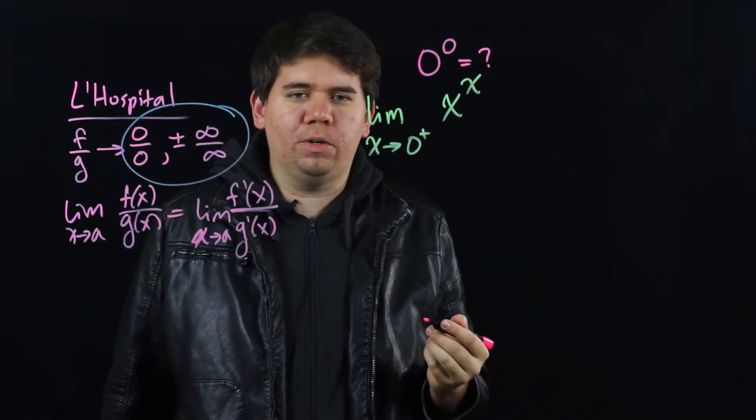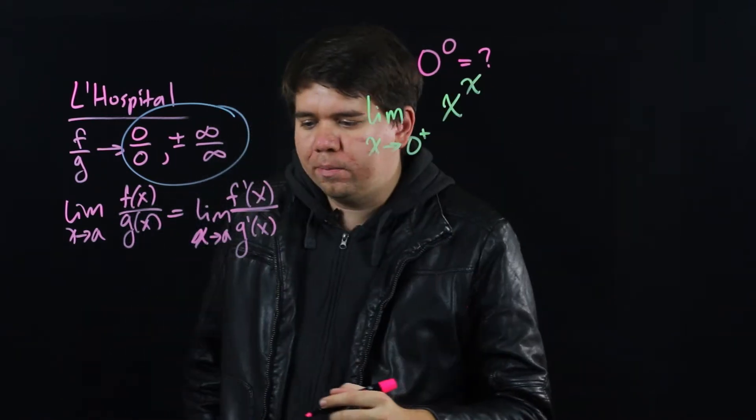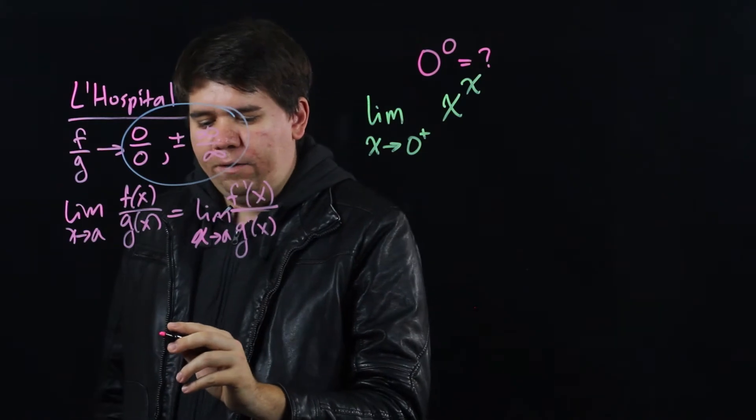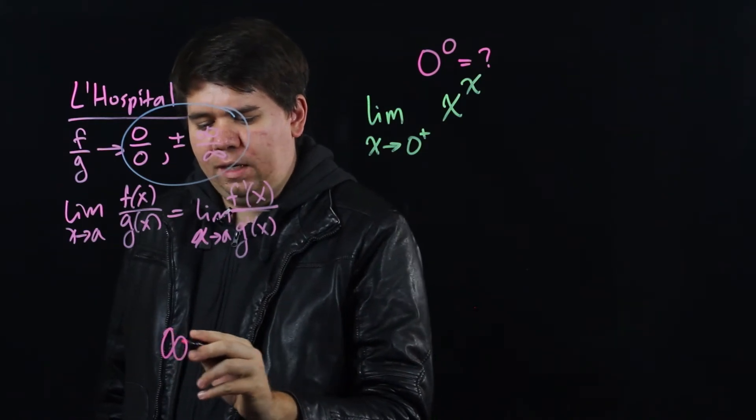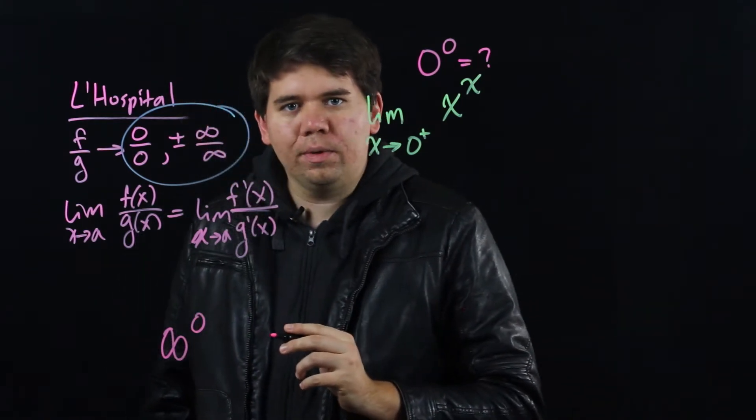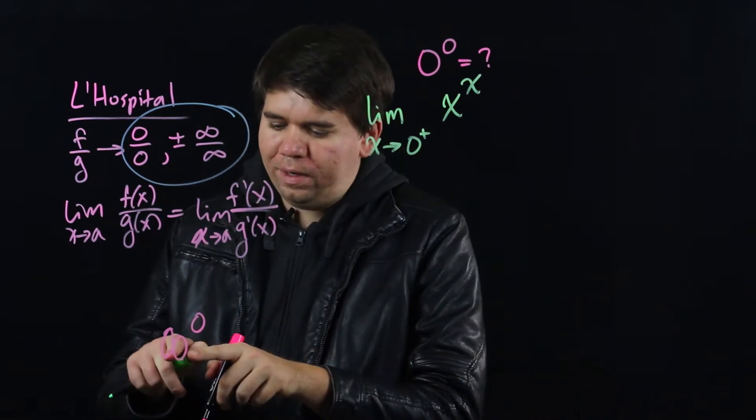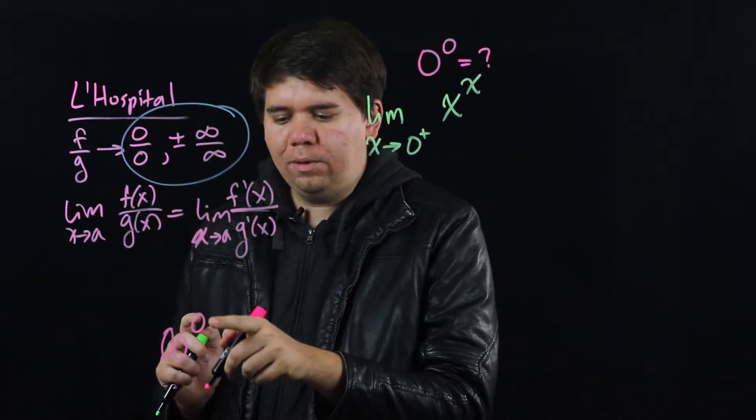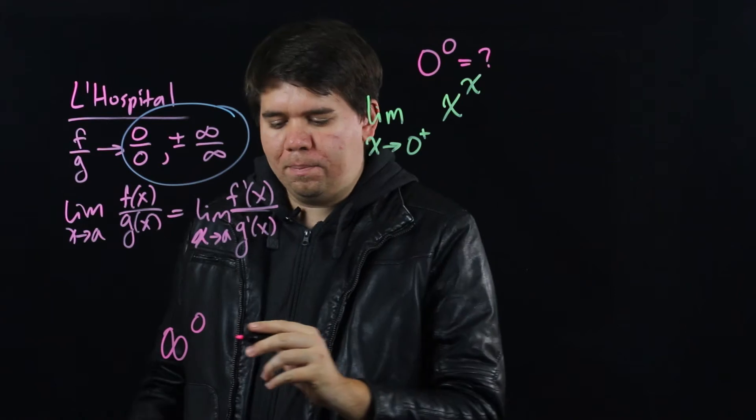There are other indeterminate forms that are powers like this as well. So for example, if you had infinity to the 0. There would be a fundamental competition. The infinity says go to infinity. The 0 says go to 1. The two are competing with each other.